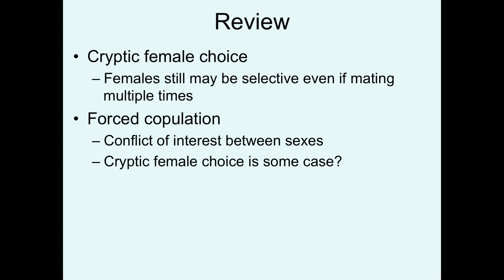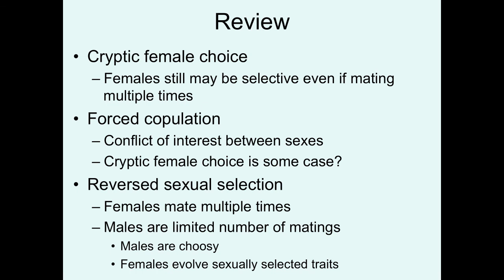Is the female basically trying to put up some initial resistance to the male's advances as a way to test his quality? It can be difficult to figure that out. Lastly, we talked about reverse sexual selection — in a situation where females mate multiple times but males are limited in the number of matings they can have, males are choosy, and females evolve the sexually selected traits either to compete among themselves or to convince males to select them and not other females.